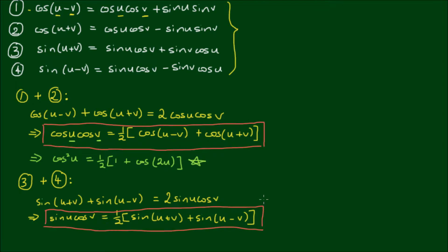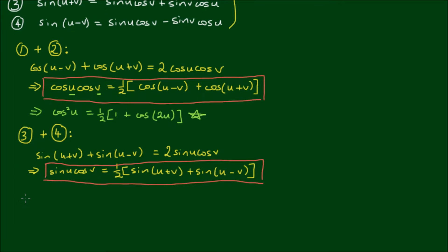In total, we will have 4 of them. So you can confirm yourself that equation 1 minus equation 2 yields sin(u)sin(v) is equal to 1/2 of [cos(u-v) minus cos(u+v)].